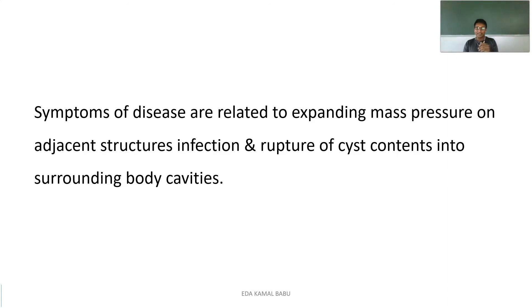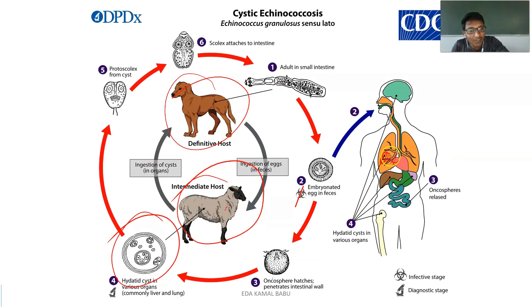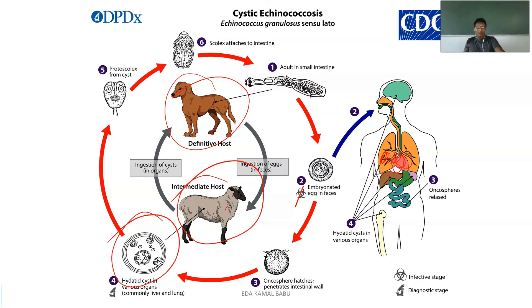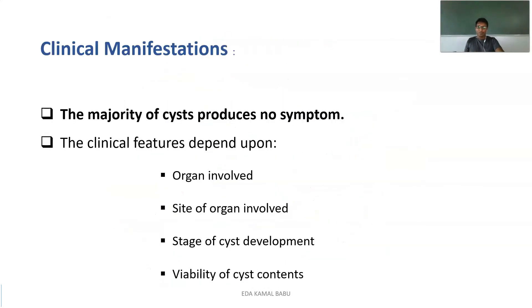Symptoms of the disease are mainly related to expanding mass pressure on adjacent structures and rupture of the cyst contents into the surrounding body cavity. For example, if a cyst is growing near the lung, adjacent structures like the diaphragm and heart face functional disability due to lack of space, resulting in cardiac and respiratory symptoms. If the cyst is in the liver, adjacent structures are disturbed; in the small intestine, bowel obstruction may occur.